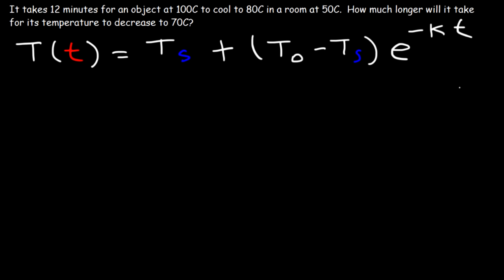T-sub-O, the initial temperature, is the temperature when t equals 0. The first thing we need to do is use the information in the first sentence to find the constant k. Once we find k, we can answer the second part of the problem.